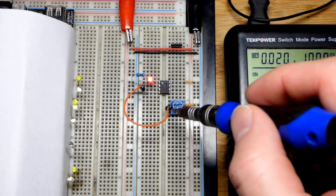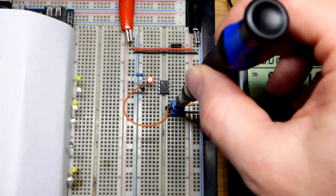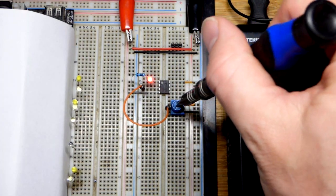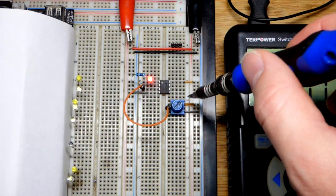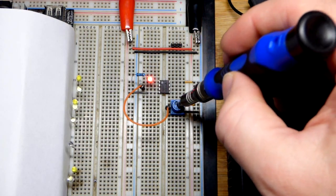If you want to set a certain amount of current, you can use an op-amp as a current source. You can see I turn down the voltage, LED gets dimmer; I raise the voltage, LED gets brighter. We're not going to get the full 10 volts though, because the output is limited to about 8 volts.